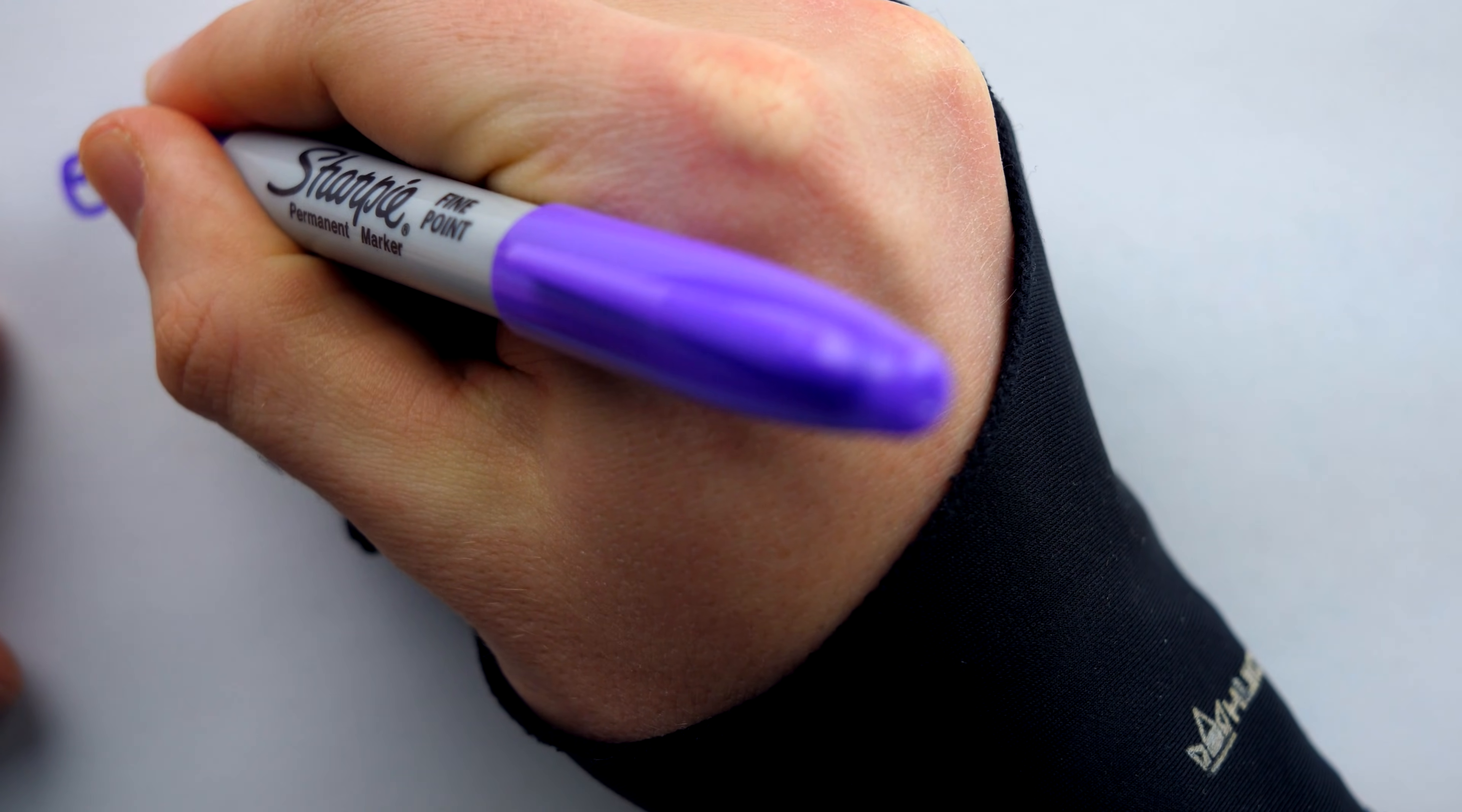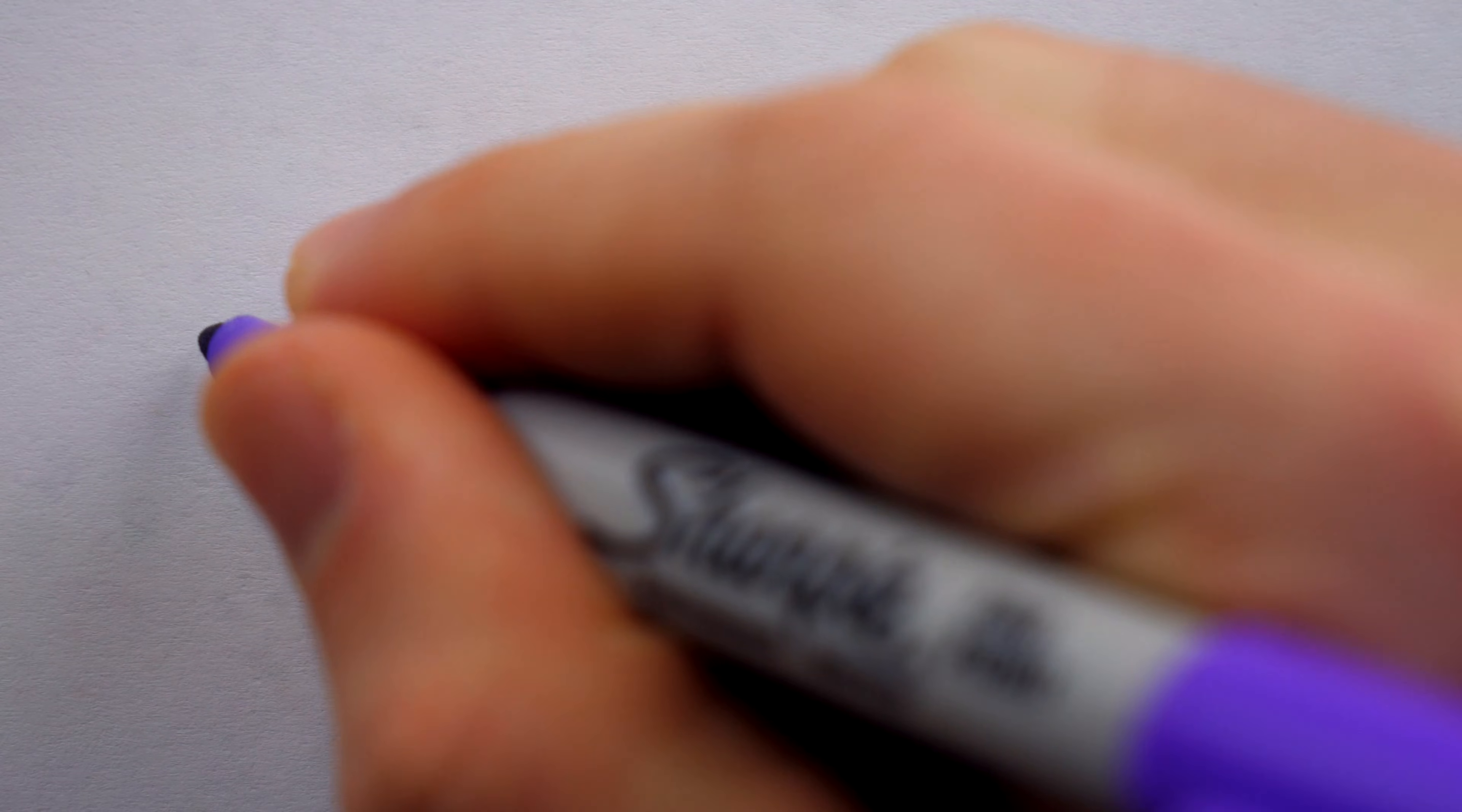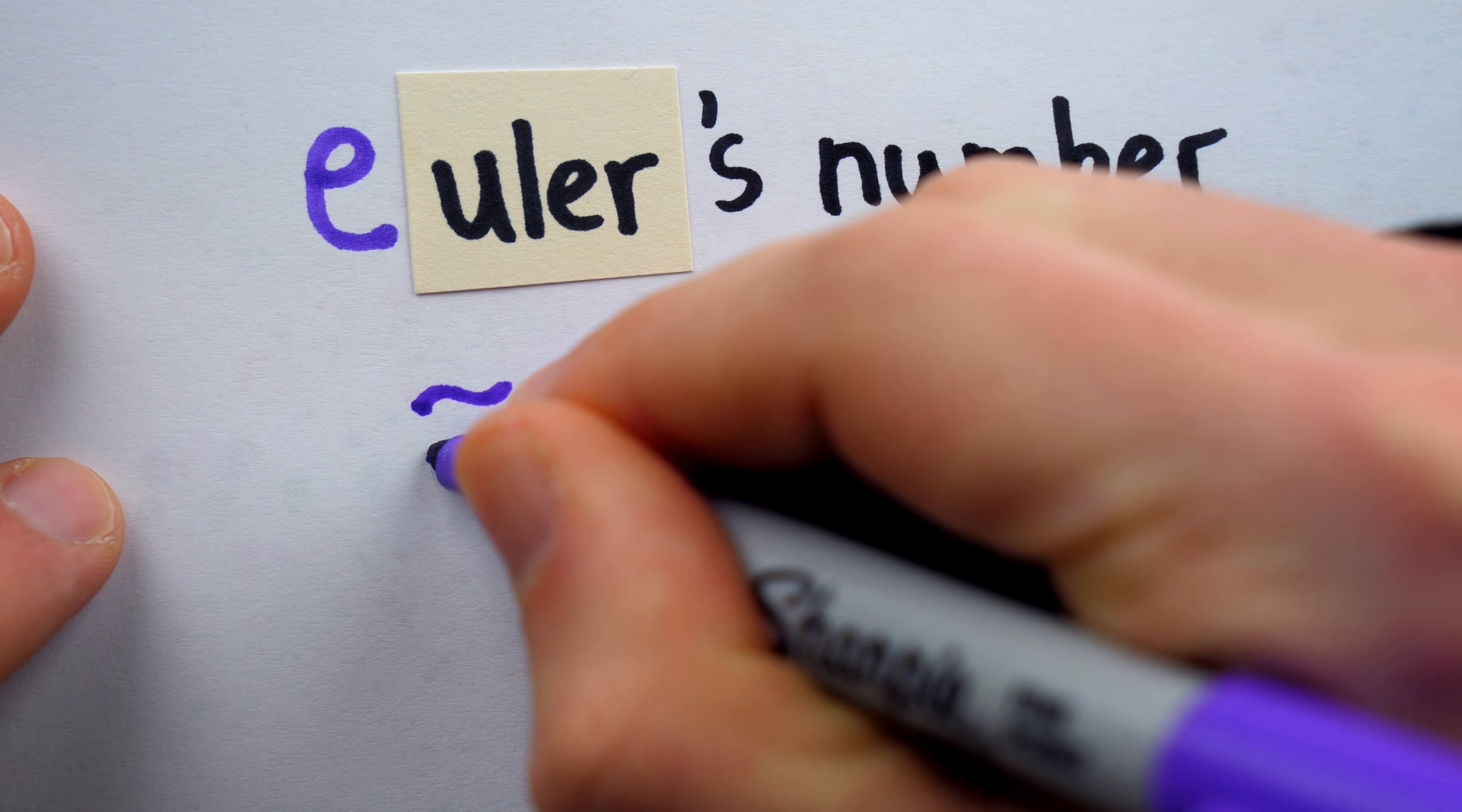Since then, E has become better known for other work, like EDGE, IRF, and ENTSCHEIDANSPRUBLINE. But many kids in high school these days aren't learning about E for IRF, they're learning E for Euler's number.